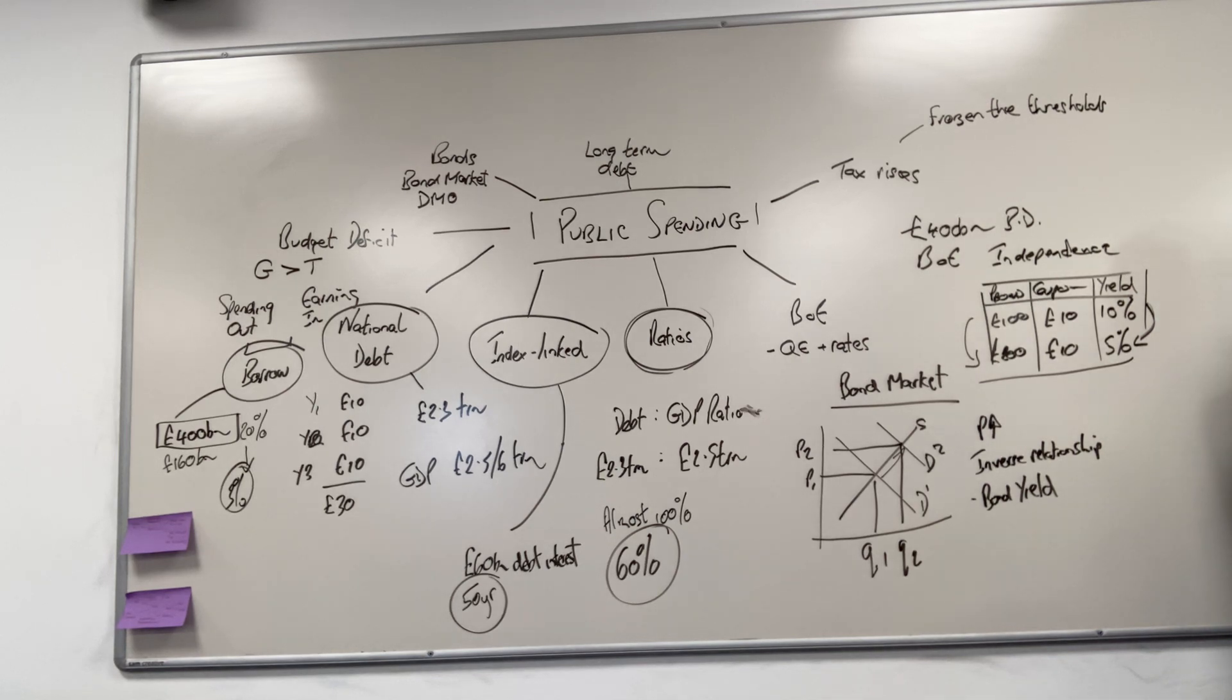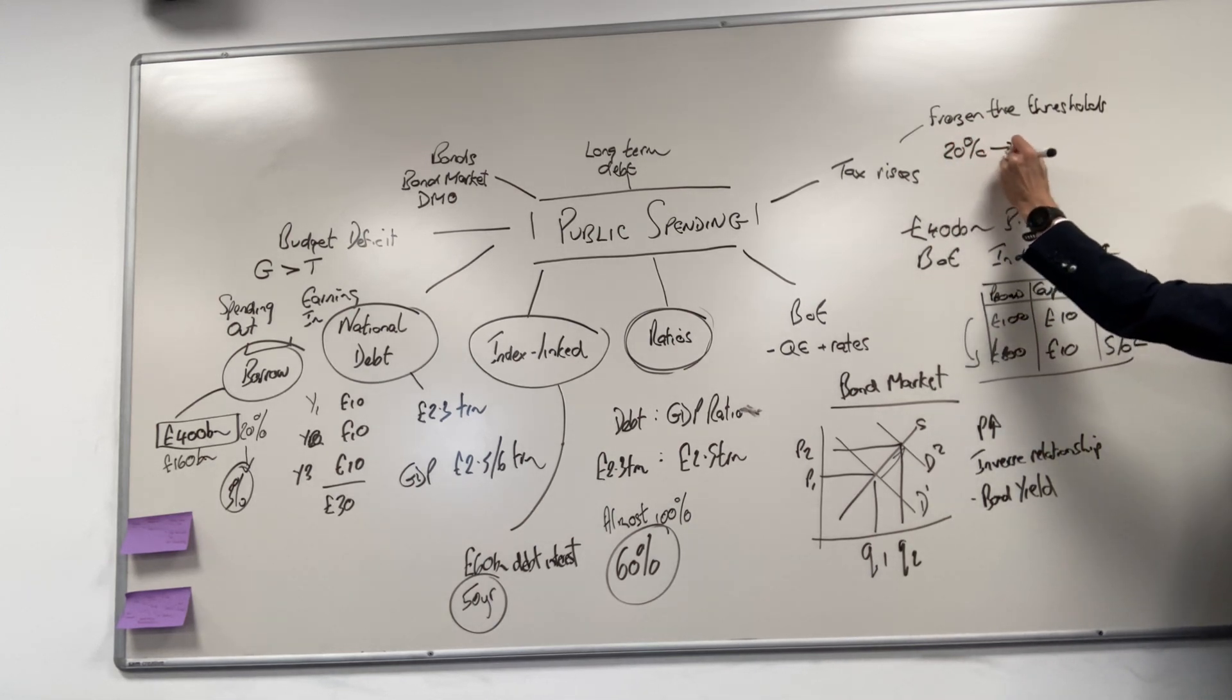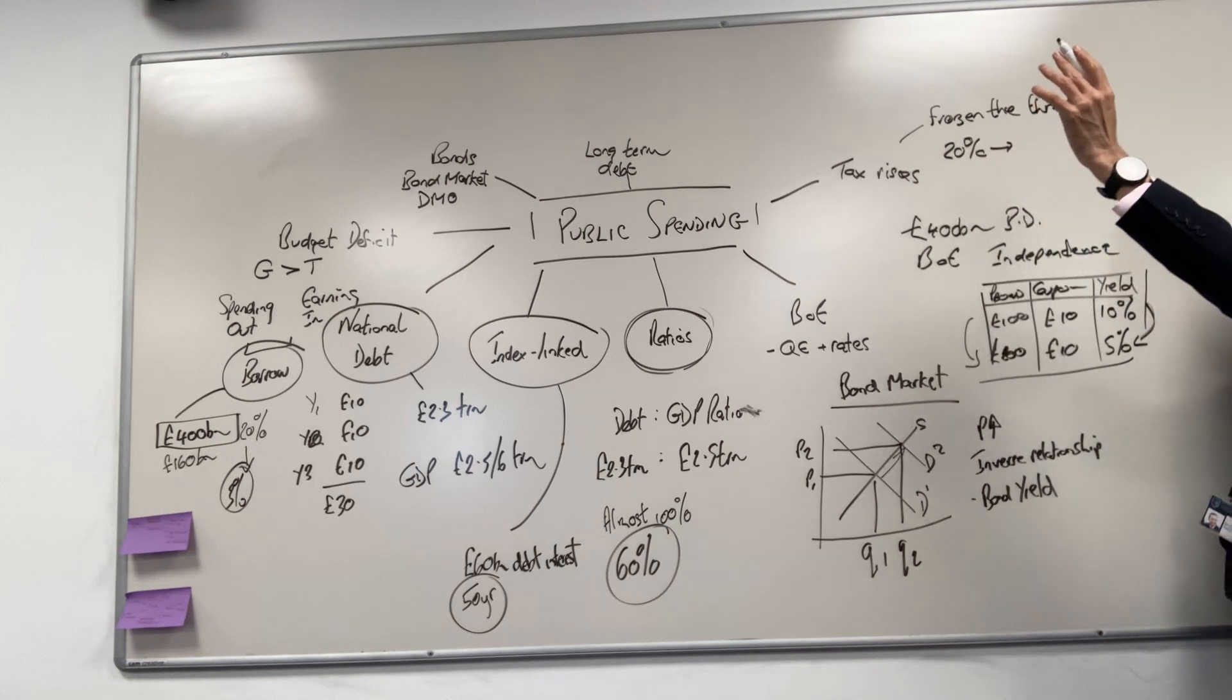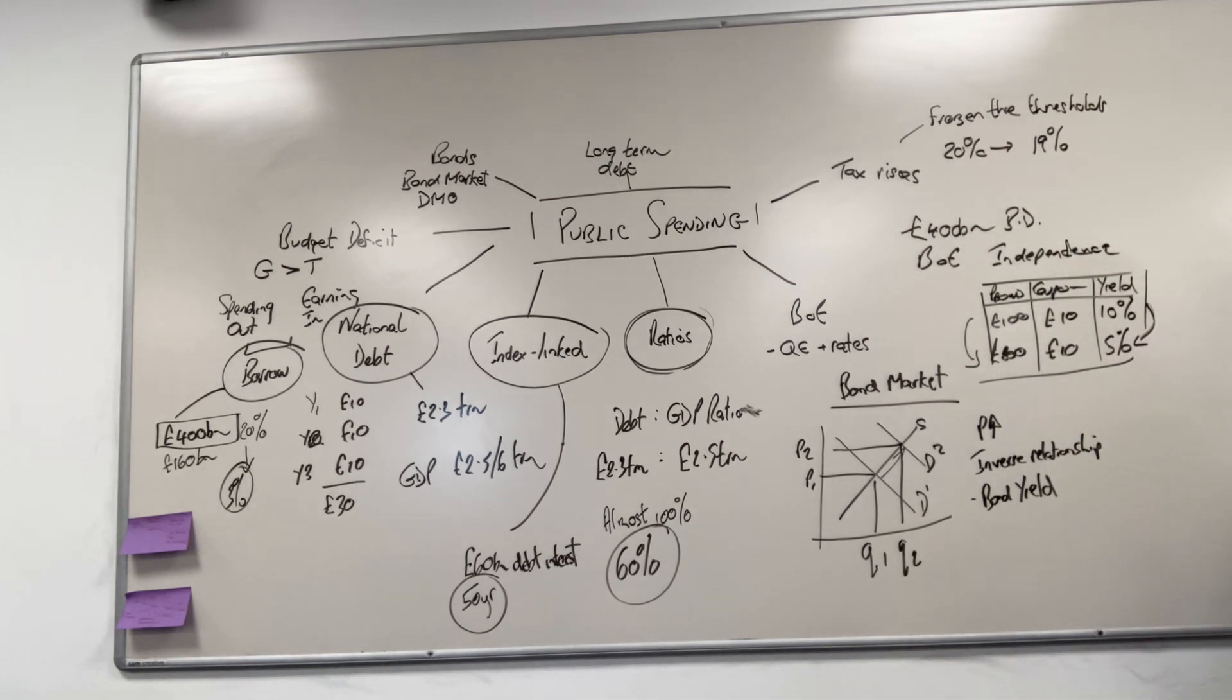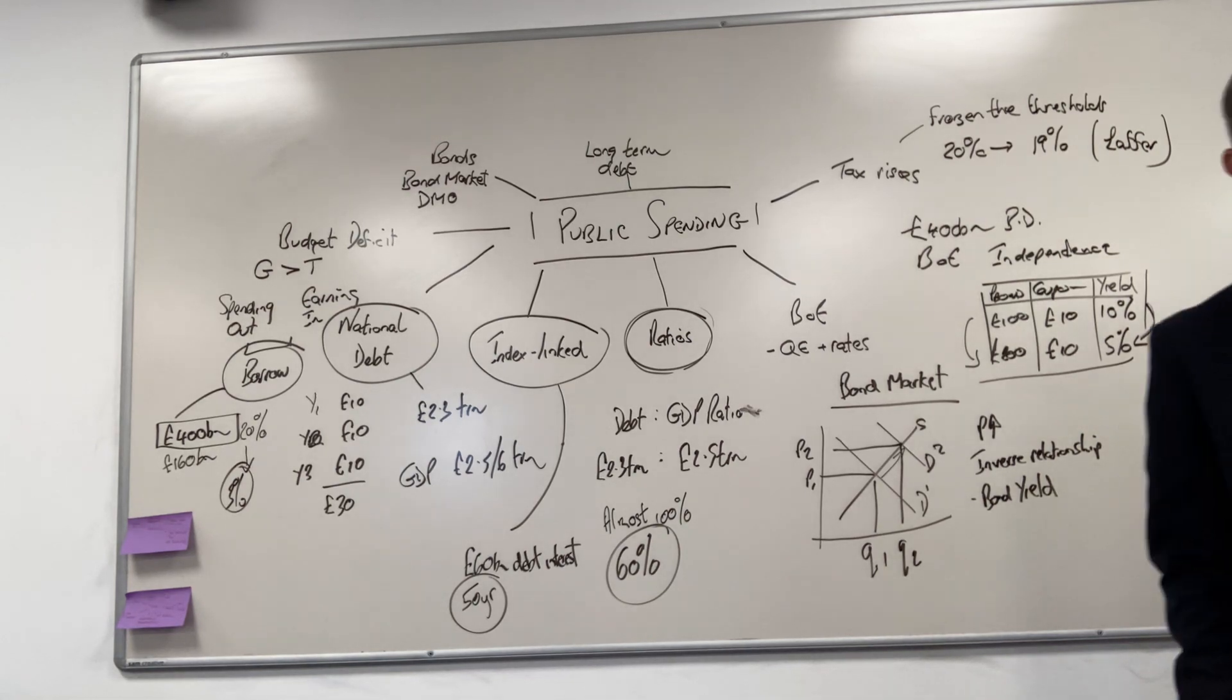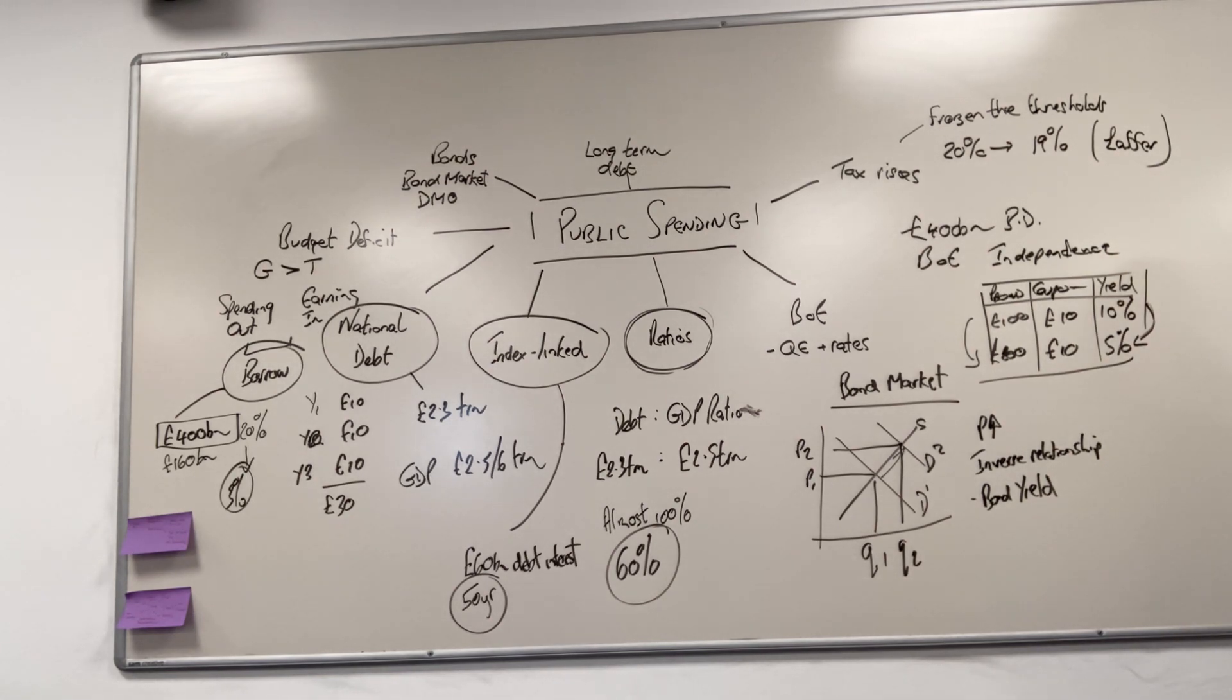He has priced in for 2023 or 2024, what's going to happen to the 20 percent rate of tax? It's going to come down to 19, so 20 down to 19. You might want to think about what Laffer might say on that and the Laffer curve. A low tax economy generally speaking will bring in more tax revenue than a higher tax economy. Maybe that's the way they're thinking.